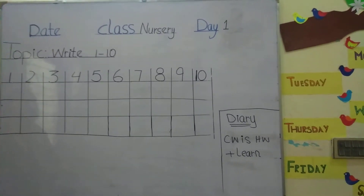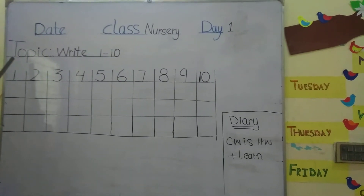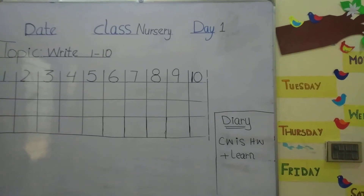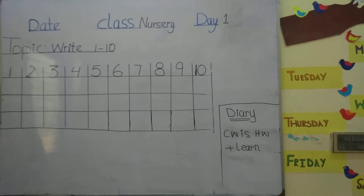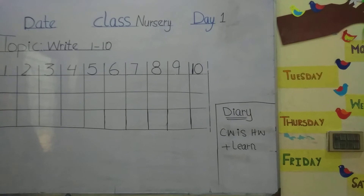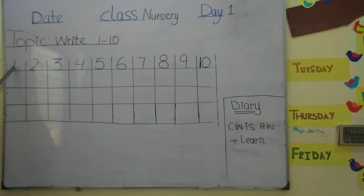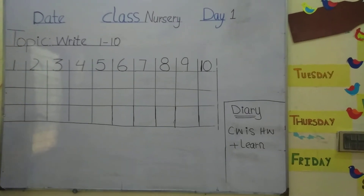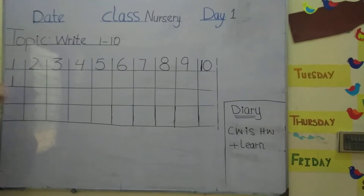Good morning nursery class. Today is day 8 and our topic is write 1 to 10. Firstly, open your notebook and write the date, CW, and then you start to write 1. This is 1. You write like this.